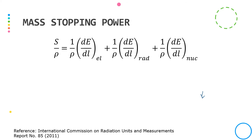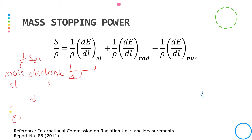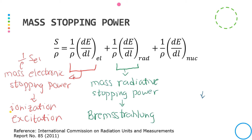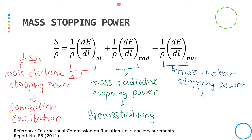Mass stopping power can be expressed as three terms. The first is mass electronic stopping power — also called mass collision stopping power in older literature — which is due to interactions with atomic electrons resulting in ionization and excitation. The second is mass radiative stopping power, due to emission of bremsstrahlung in the electric field of atomic nuclei or atomic electrons after the charged interaction. The third is mass nuclear stopping power, due to elastic Coulomb interactions in which recoil energy is given to the atom.